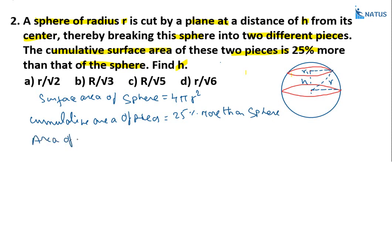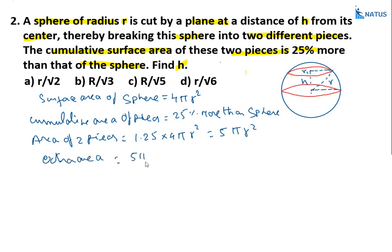The area of the two pieces is 25% more than the old sphere, so it equals 5πr². The extra area is 5πr² - 4πr² = πr². This extra area comes from the two circular faces created by the cut.